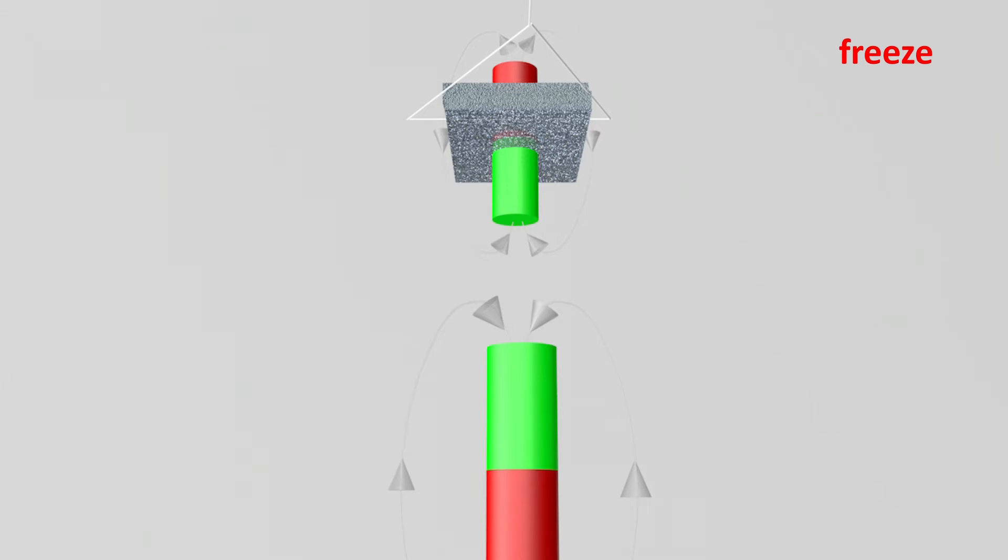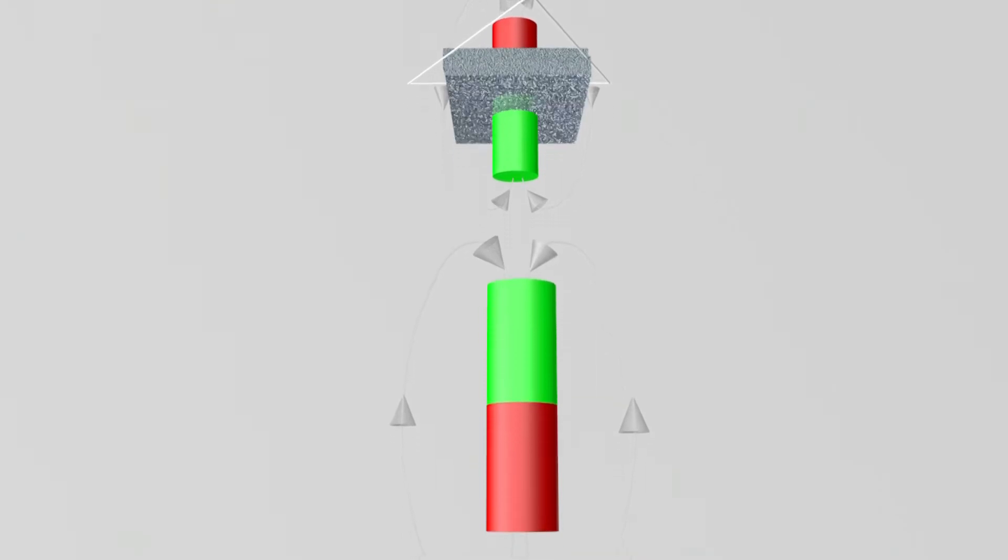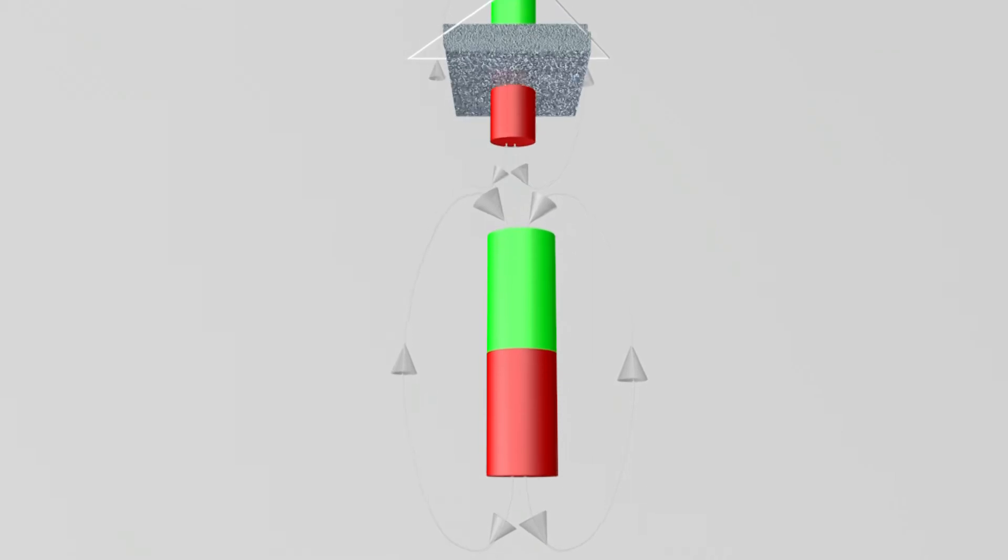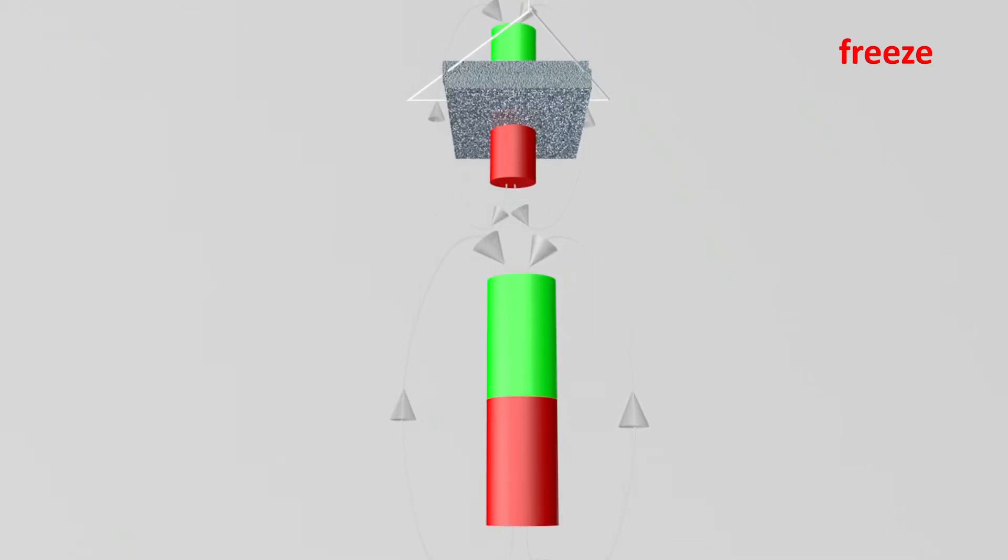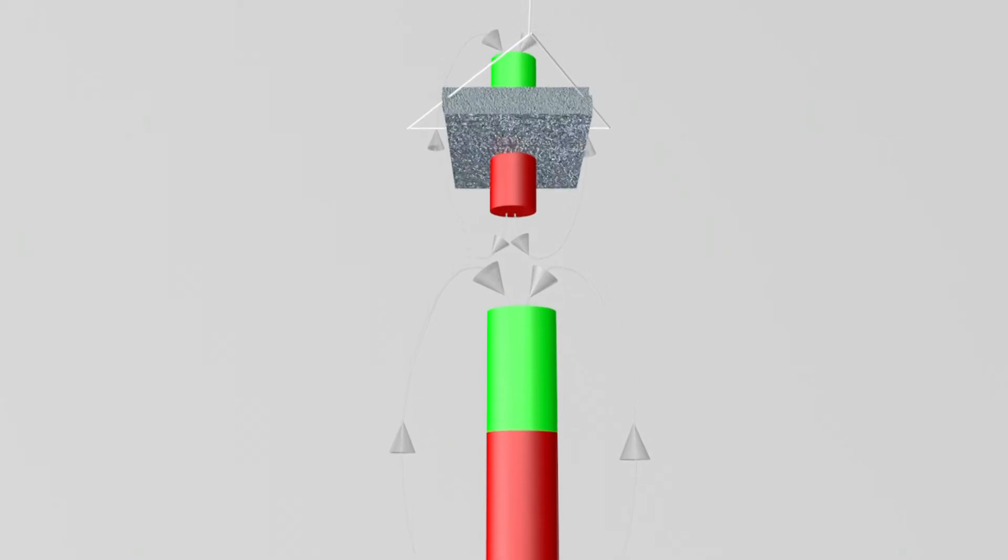If you remove the neodymium magnets from the aluminum, the direction of the eddy currents is reversed, so that the south pole and the north pole now face each other, and the aluminum is attracted by the neodymium magnet.